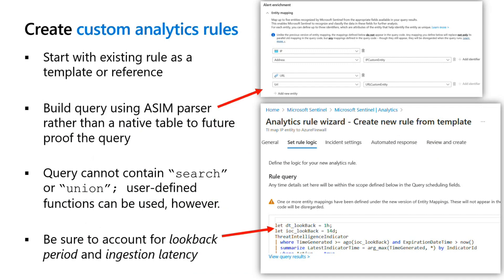You can also create custom analytics rules. The easiest way is to start with an existing rule as a template or reference — take one of the existing working rules and use that as a starting point for your environment. It is recommended that you build your query using an ASIM parser rather than using your native tables, to future-proof your query.